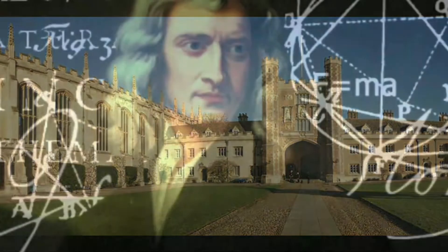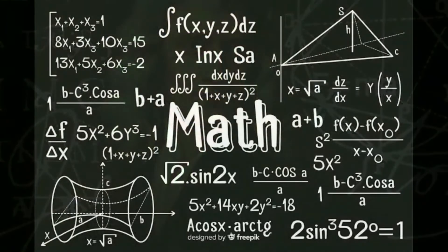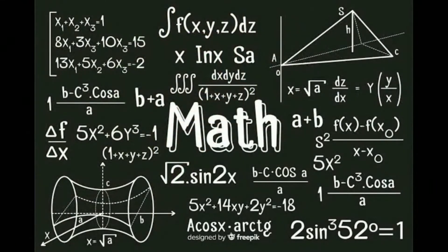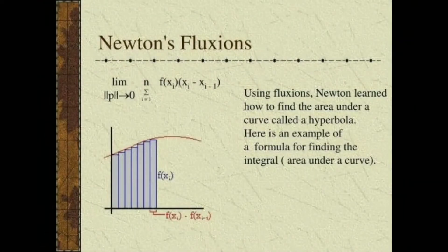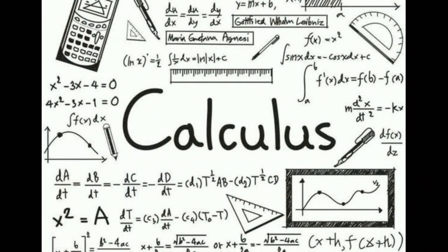Isaac Newton was one of the greatest mathematicians. When he was 24 years old he invented a whole new branch of mathematics which he called the fluxion. Today we call this the calculus. Calculus has so many uses in all other branches of science like physics, chemistry, mathematics, and engineering.